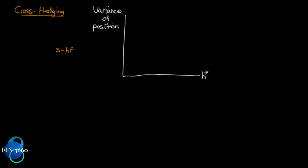Notice I'm not saying it's the optimal one yet. The hedge ratio that we determine — whether it be one-for-one or whether it be 70% of our risk — that's the position. We have a position in the spot, long or short, with an offsetting position in the futures contract. And what we want to do is we want to minimize the variance of that position. We want to select H, our hedge ratio, in such a way that it minimizes the variance of that position.